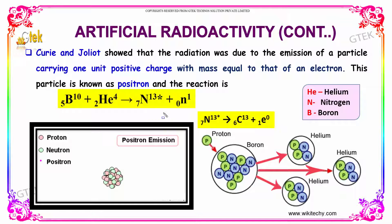Here is the reaction. You can see boron reacts with helium to form nitrogen, which is really unstable, with the emission of a neutron. The unstable nitrogen becomes carbon-13 with a positron emitter.